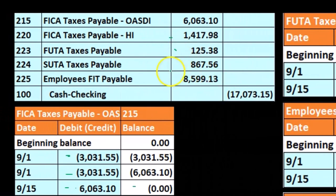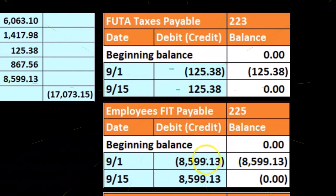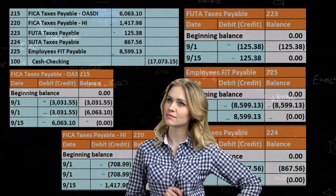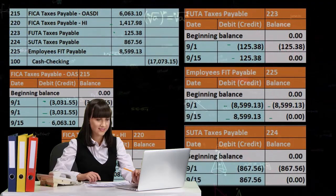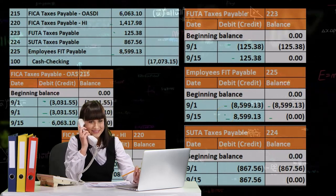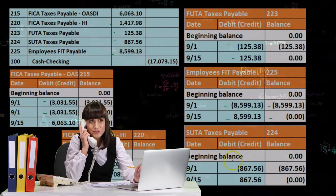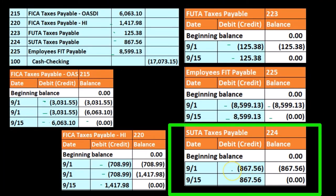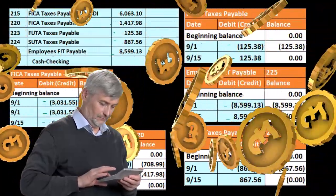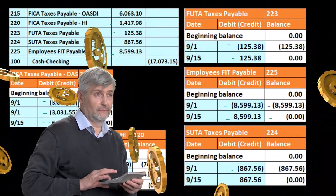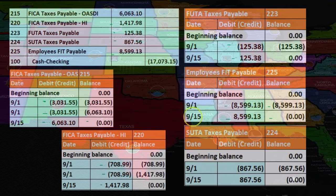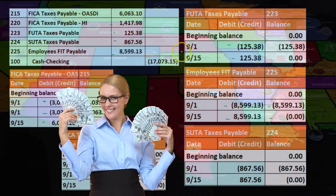And then if we go to the FIT, we have the FIT here. It was at $8,599.13. We paid it, then it goes down to zero. Note again there's only one entry here, and the reason is because it's an employee portion — this is not an employer tax. It only comes out of the employee paycheck. So this is an employee tax that we paid off — no matching here. Then we have the SUTA, which is the state unemployment tax. That was at $867.56. We brought it down to zero — we're paying off the SUTA. Again, typically in our problem it's only an employer tax. It could have an employee portion depending on the state, but that'll depend on the state. It'll often mirror kind of the FUTA, and FUTA and SUTA will be similar in the way it's constructed, depending on the state.